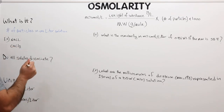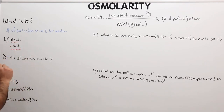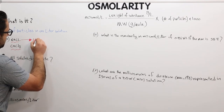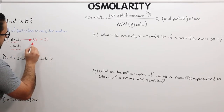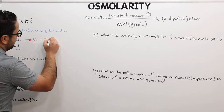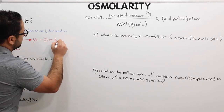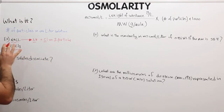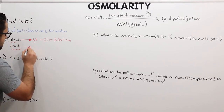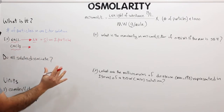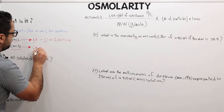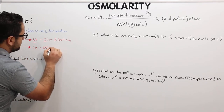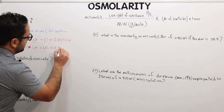Let's take a couple of examples. We have sodium chloride and calcium chloride. Sodium chloride dissociates into sodium plus chloride — therefore we have two particles. In the case of calcium chloride, it dissolves into calcium plus two chloride ions, so we have one plus two, which equals three particles.